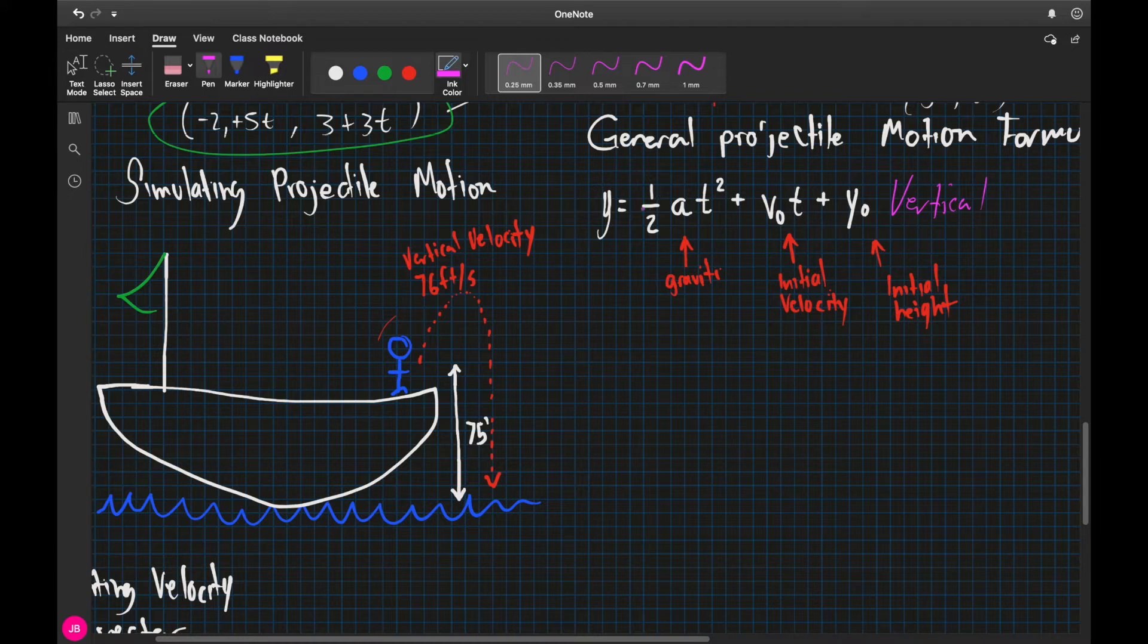We're going to take half of gravity times t squared. And the force of gravity, if we're talking about feet, is going to be 32 feet. And if we're talking about meters, it's going to be 9.8. So since we're talking about feet here, we're going to be using 32. And since gravity is working in a negative direction, it's pushing down on us, we're going to make this negative.